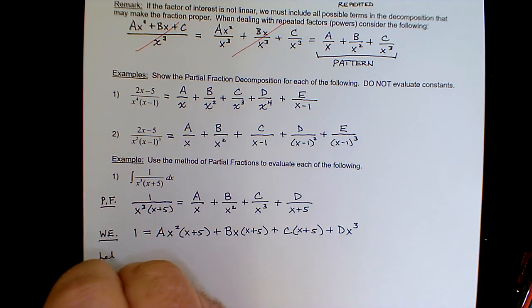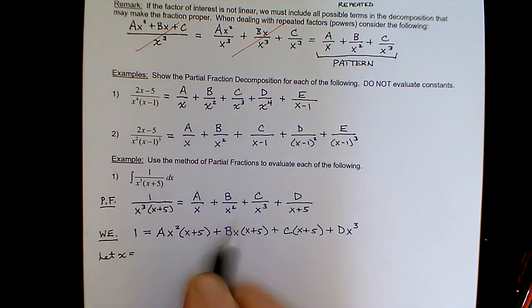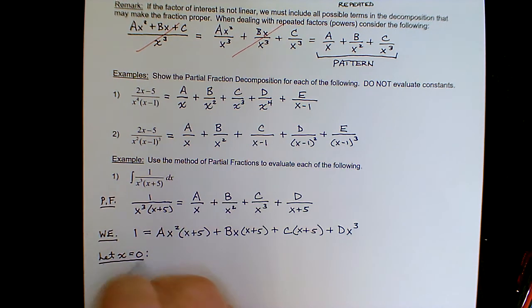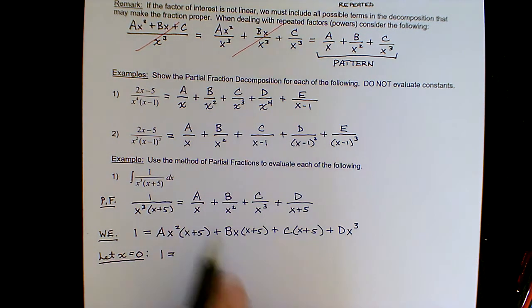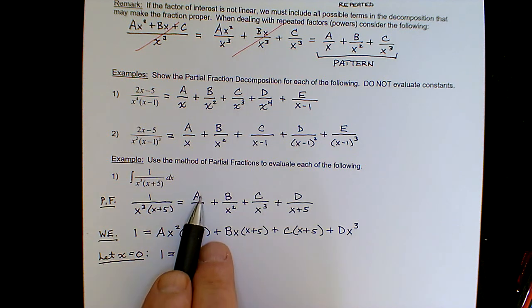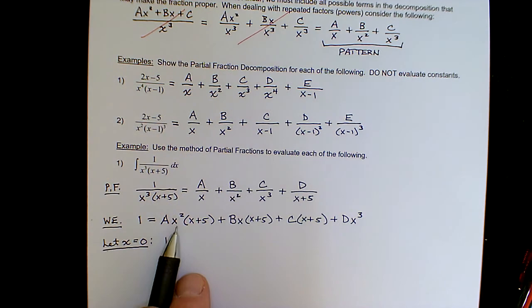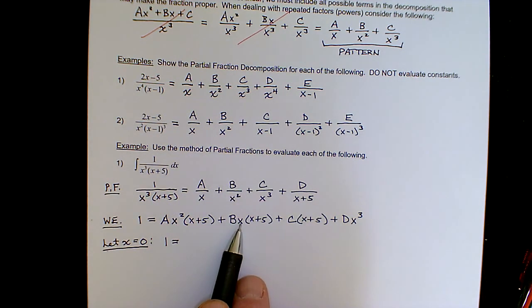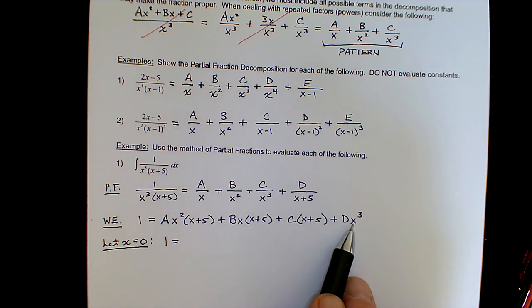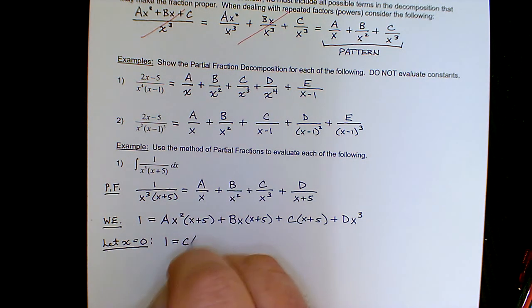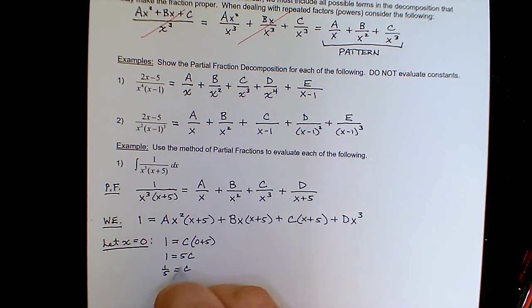We always suggest the elimination method first. For repeated factors, it's not the unique factor but the highest power that allows cancellation. Setting x equals zero: the terms containing a, b, and d all have x as a factor and drop to zero, leaving 1 equals c times zero plus five, so 1 equals 5c, and c equals one fifth.